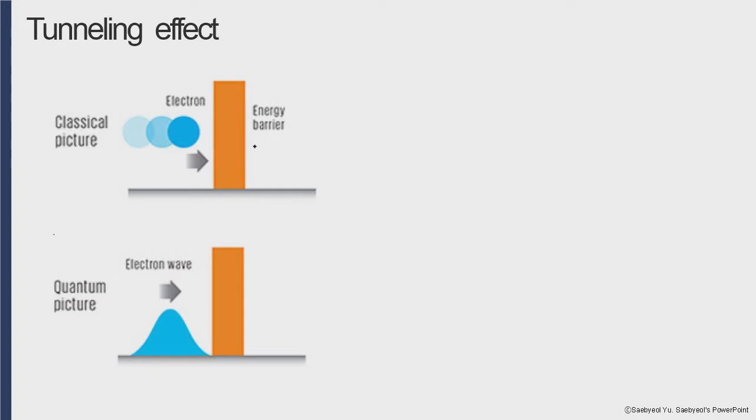Tunneling effect is the quantum mechanical phenomenon where a wave function can propagate through a potential barrier. In classical mechanics, particles that do not have enough energy to classically surmount a barrier cannot reach the other side. Thus, a ball without sufficient energy to surmount the hill would roll back down. A ball that lacks the energy to penetrate a wall bounces back. Alternatively, the ball might become part of the wall.